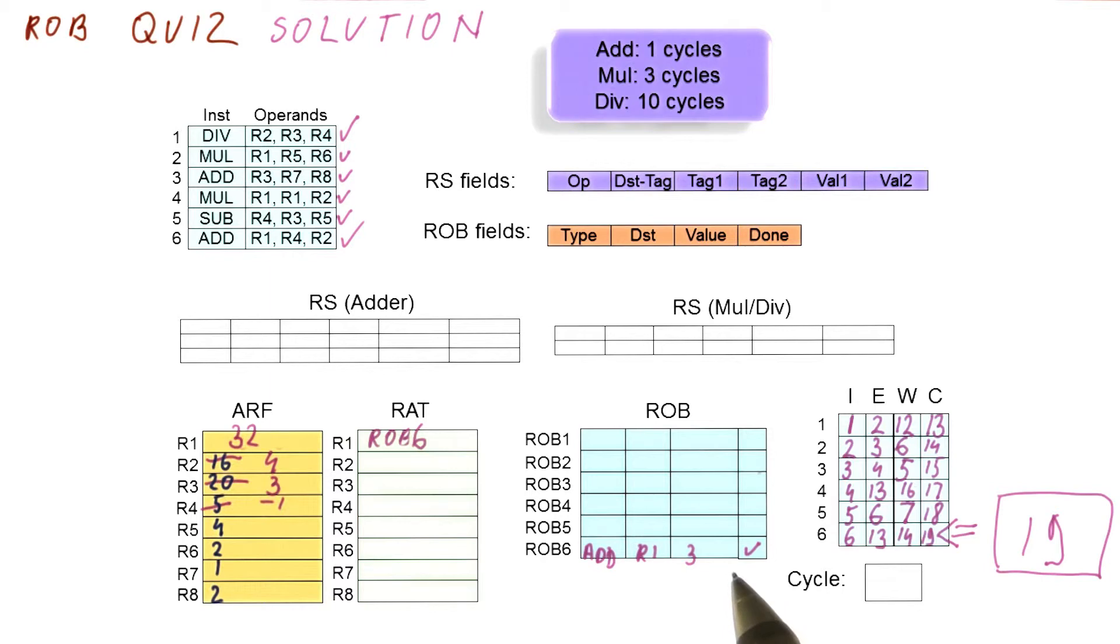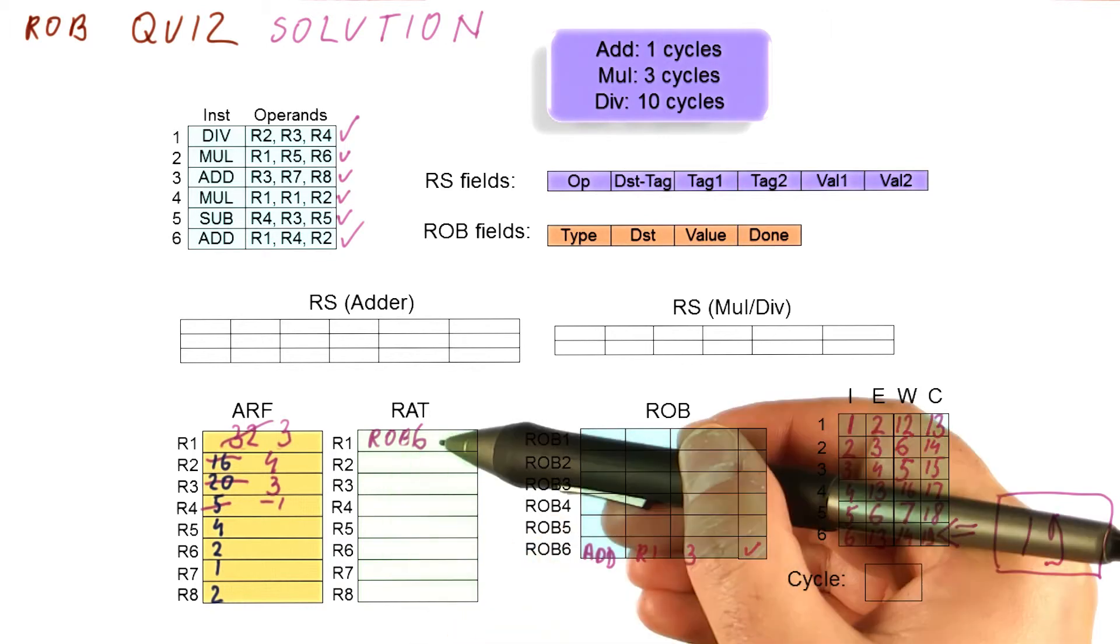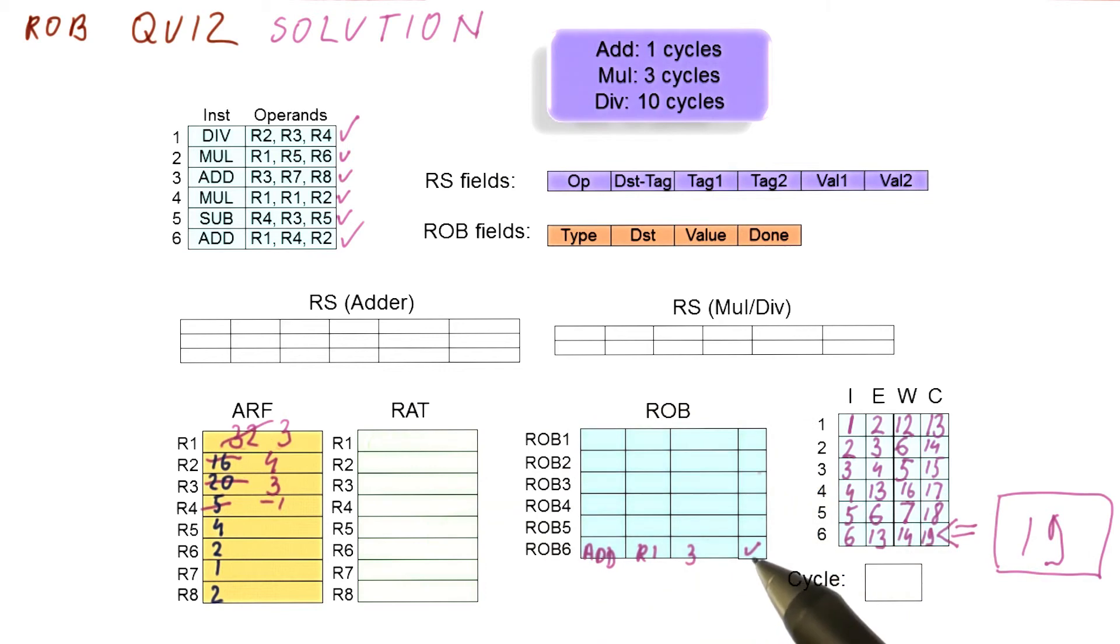And finally, in cycle 19, we commit this instruction. We put the value of R3 into R1. We then check the ROB entry for R1. Is it pointing to ROB6? Yes, it is. Make it point to here, and we can free this ROB entry.